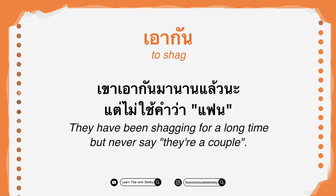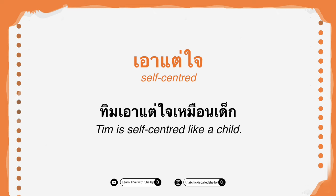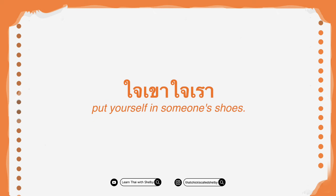Next is เอาใจ — to please someone. Example: เขาชอบให้คนอื่นเอาใจ — he likes others to please him. But เอาแต่ใจ means self-centered, which is negative. Example: ทิมเอาแต่ใจเหมือนเด็ก — Tim is self-centered like a child. There's also an idiom: เอาใจเขามาใส่ใจเรา — literally 'to take their heart and put it into your heart' — meaning to put yourself in someone's shoes. In reality, it's shortened to ใจเขาใจเรา, used to warn someone: 'hey, put yourself in their shoes.'